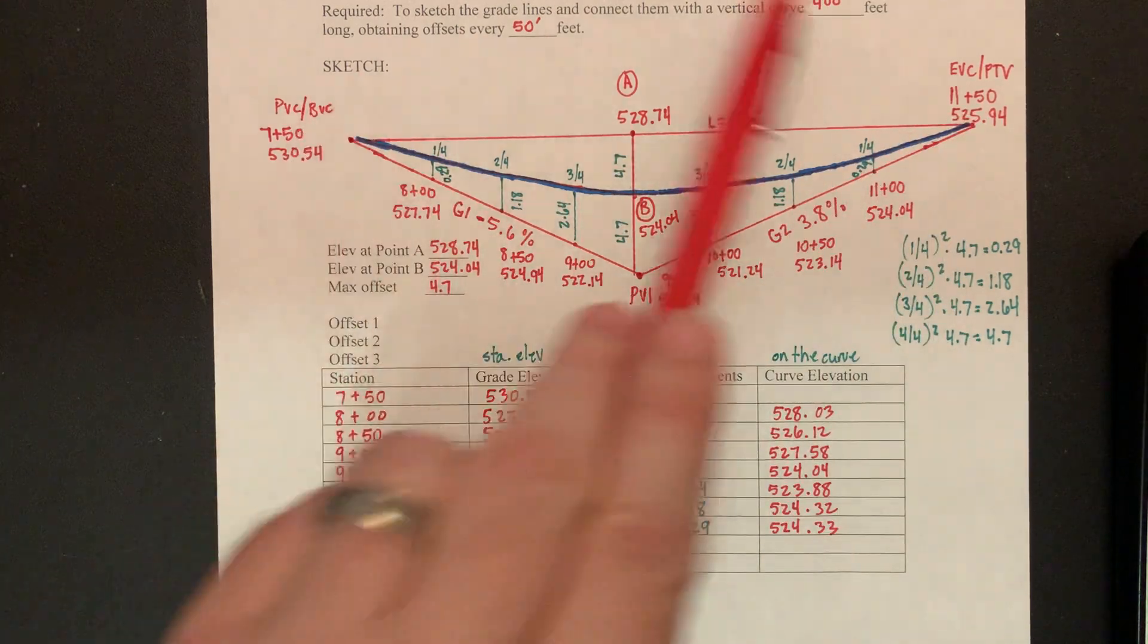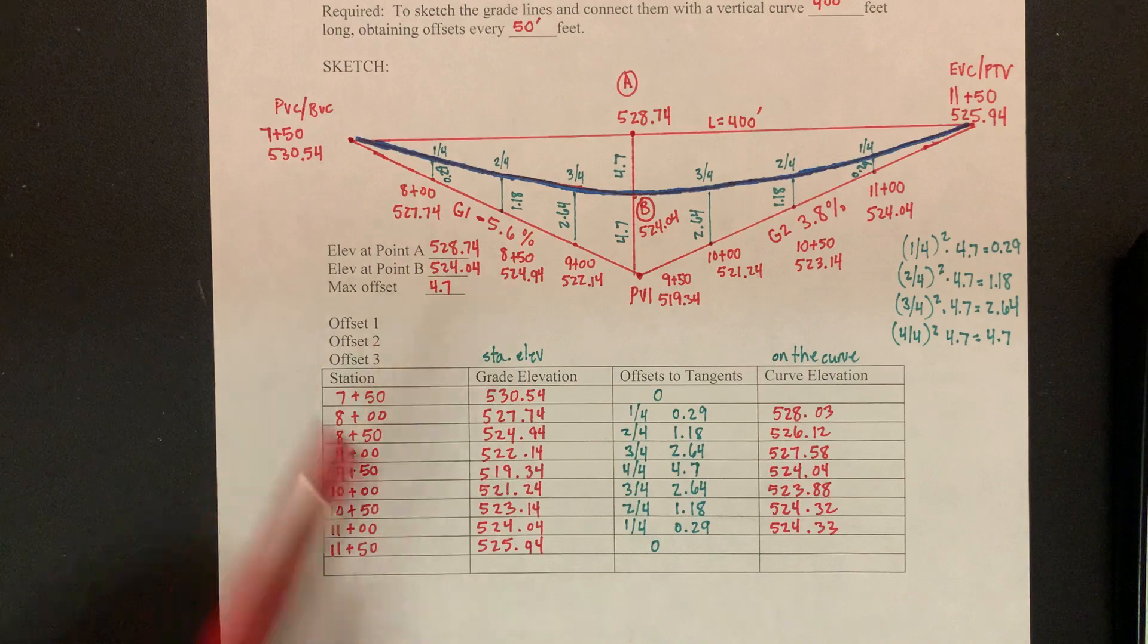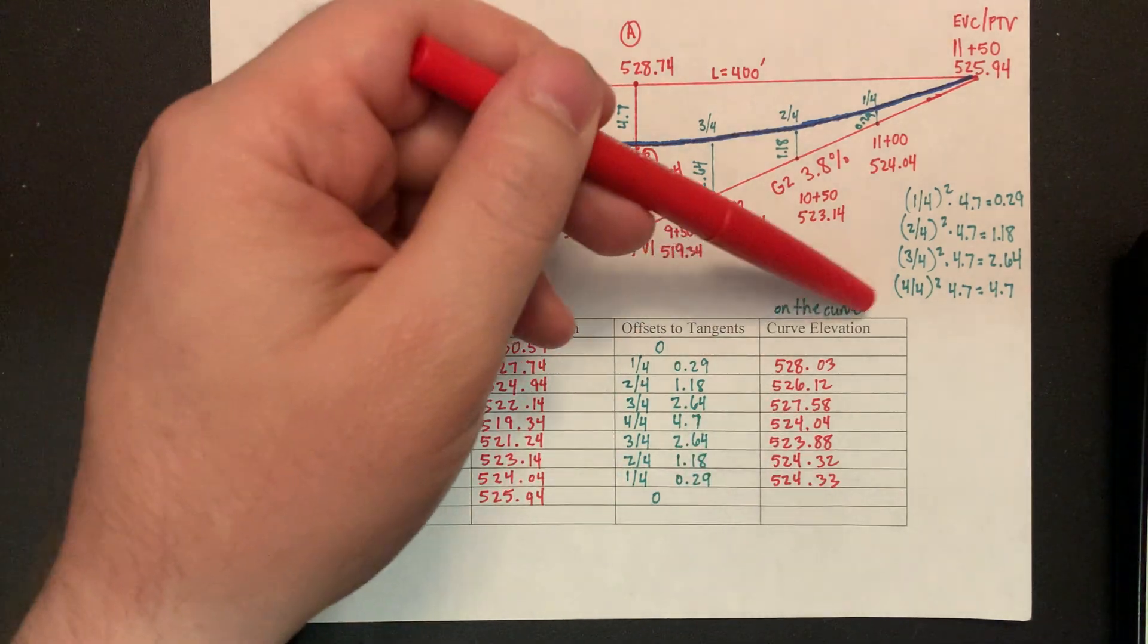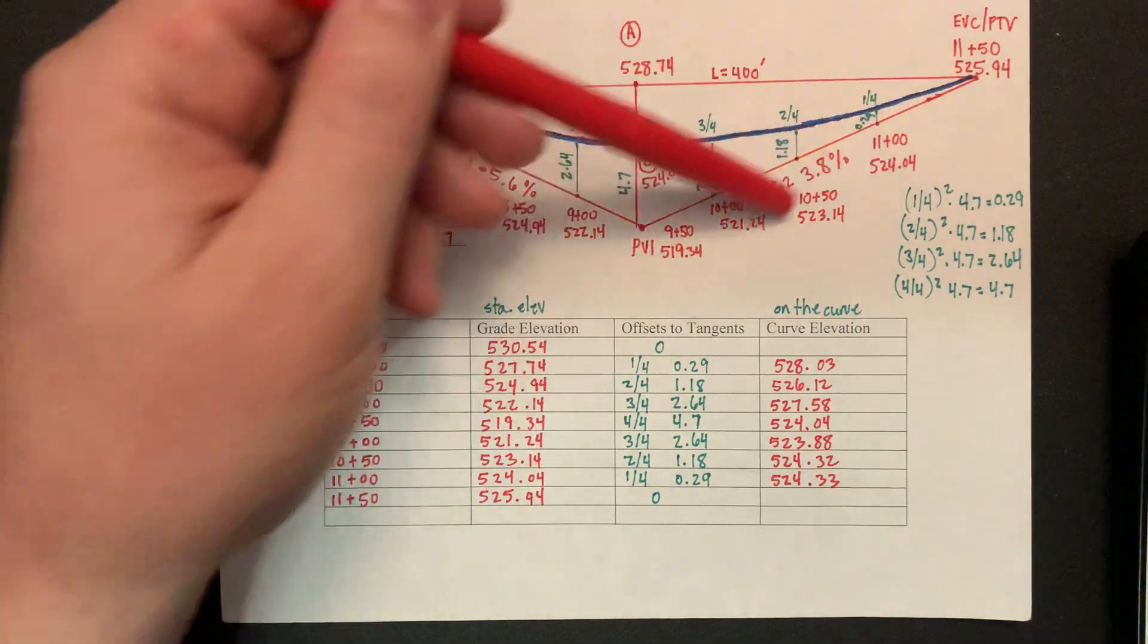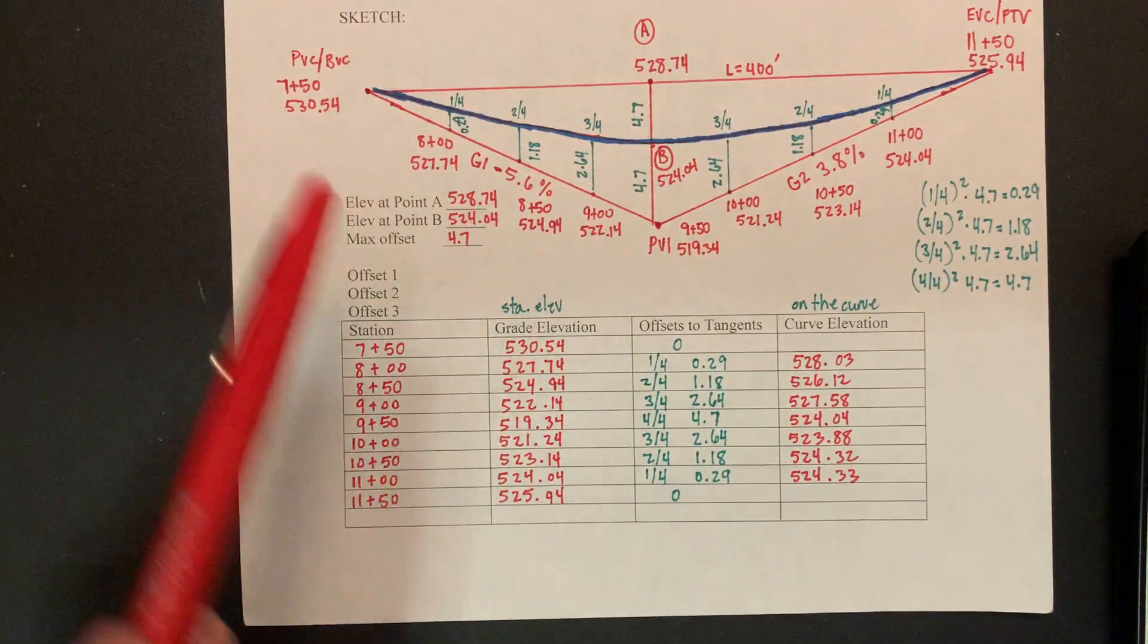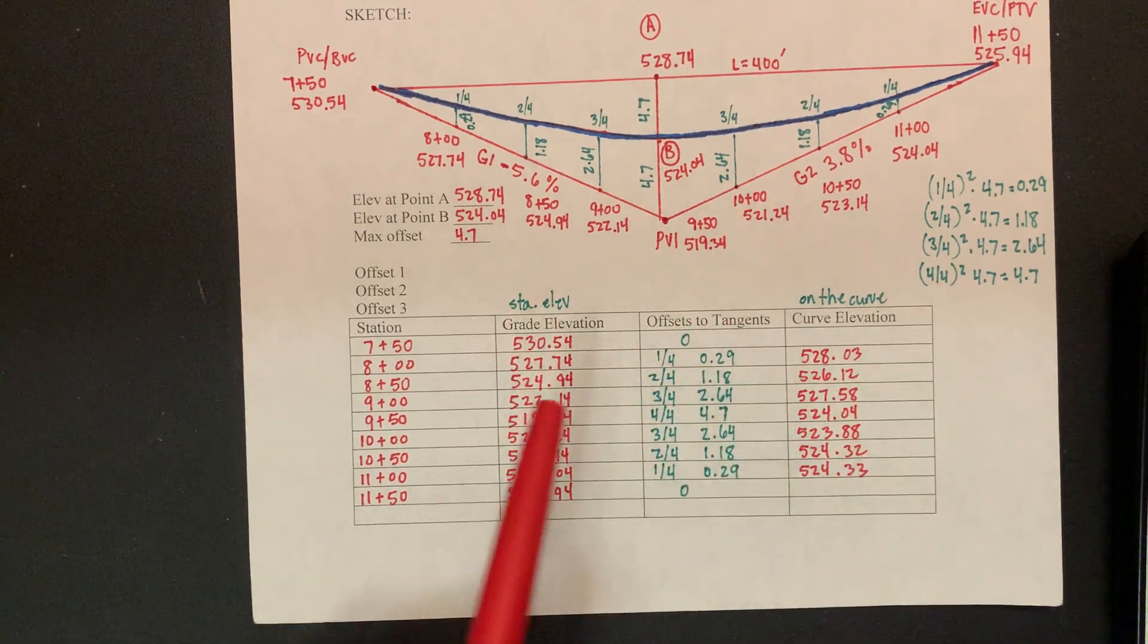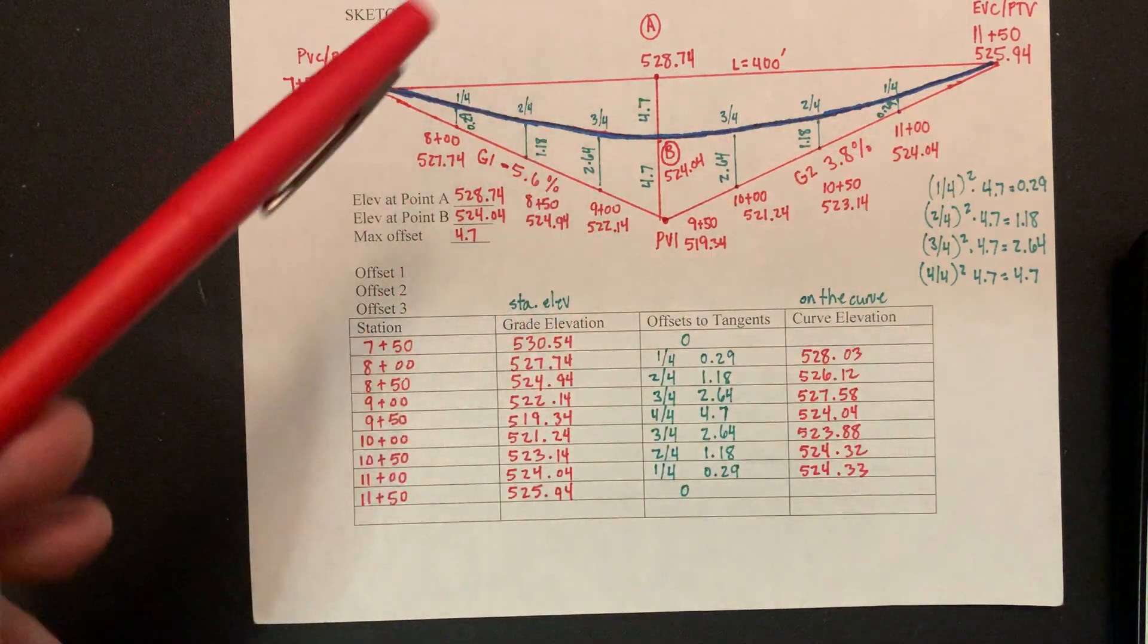So when you do the midpoint here, this curve, whether it's a crest or it's going to be a sag, it's always going to hit the middle of this distance right here on a symmetrical vertical curve. So and then you're just going to kind of continue all the way through. You're going to add this back. So you're going to have, this elevation is actually going to be on. So I like to write this, I like to write on the curve and this is the station elevation. So this is your station elevations and this is on the curve. And so when I do some of the other problems, I'm going to use those terms and they call it grade elevation, curve elevation. Make sure you know all the terms because they could use anything in these problems.